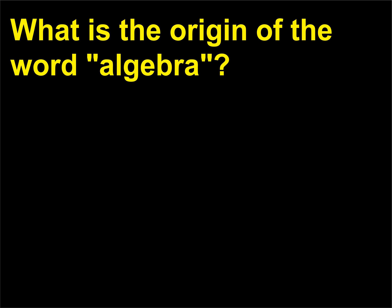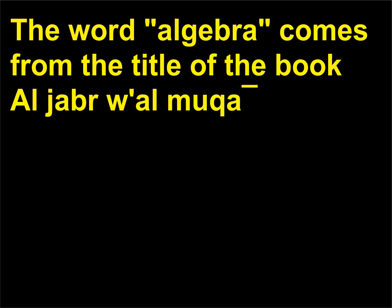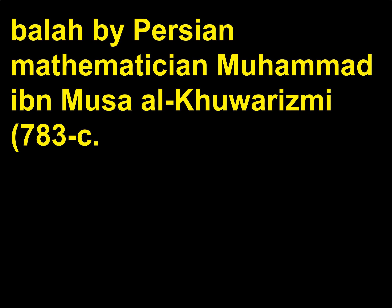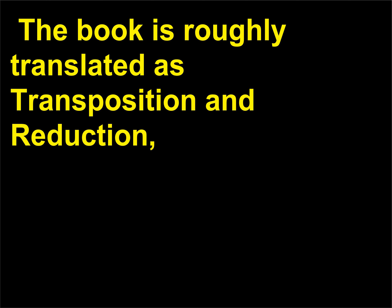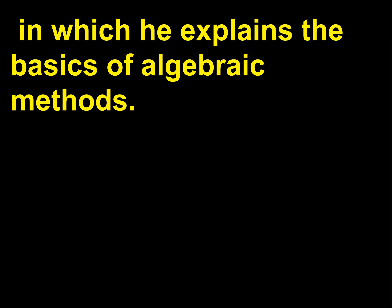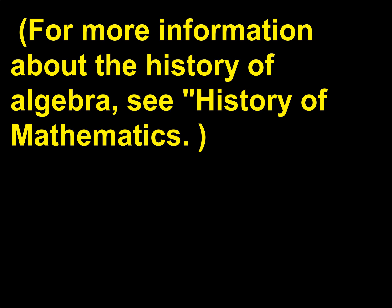What is the origin of the word algebra? The word algebra comes from the title of the book Al-Jabr w'al-Muqabala by Persian mathematician Muhammad ibn Musa al-Khwarizmi (783–850), also seen as Al-Khawarizmi. The book is roughly translated as Transposition and Reduction, in which he explains the basics of algebraic methods. For more information about the history of algebra, see History of Mathematics.